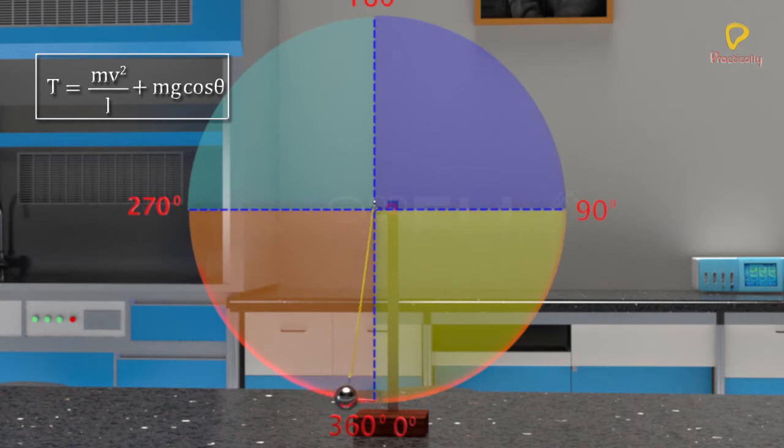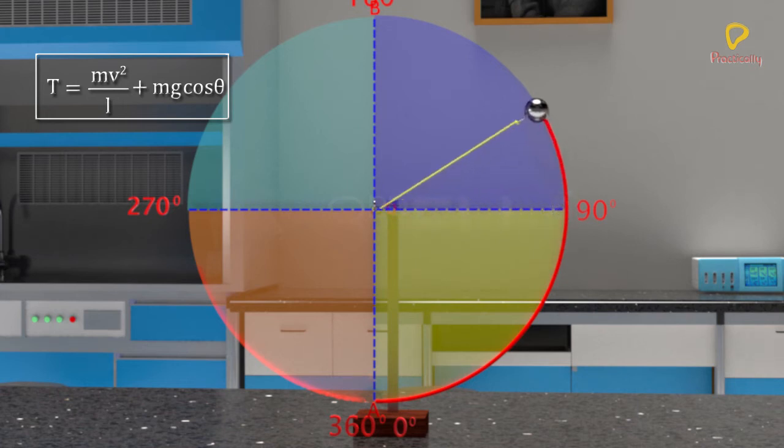If the initial velocity of the bob is very small, it may not be able to achieve angles greater than 90 degrees, in which case it simply traverses back the path it takes. If initial velocity of the bob is greater, it may cross the horizontal line but will not be able to reach the highest point.